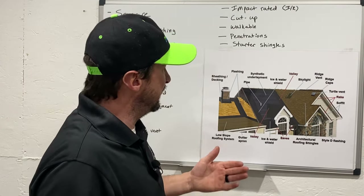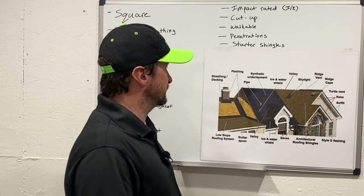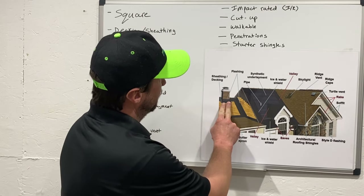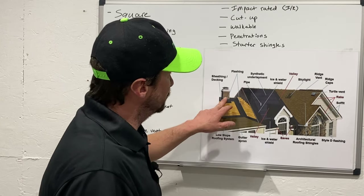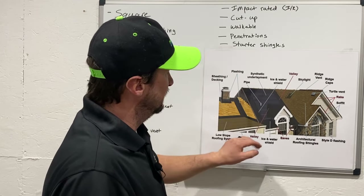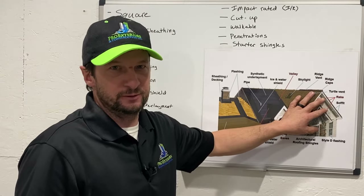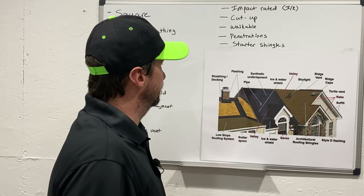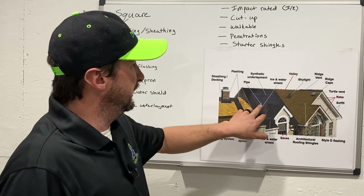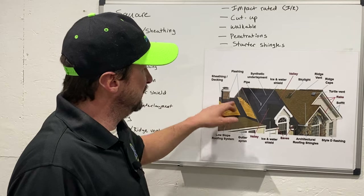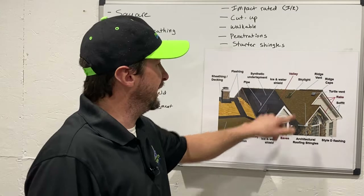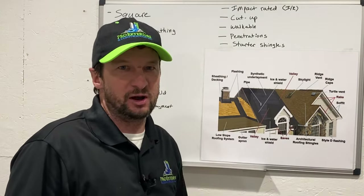The next term is roof penetrations, or just penetrations. That's anything that goes through your roof — anything that penetrates through the roof sheathing. That includes chimneys, sewer pipes, turtle vents, skylights, and anything similar. These also add to the labor cost because we have to take extra time to work around them. Pipes get a special boot, chimneys and walls get additional flashings, and skylights get additional flashing — all of that factors into the cost of replacing your roof.